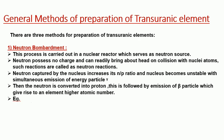There are three general methods used to prepare transuranic elements. First is the neutron bombardment method. Second is bombardment with accelerated particles or high voltage nuclei. Third is the heavy ion bombardment method. Let us see them one by one. In the neutron bombardment method, this process is carried out in the nuclear reactor.